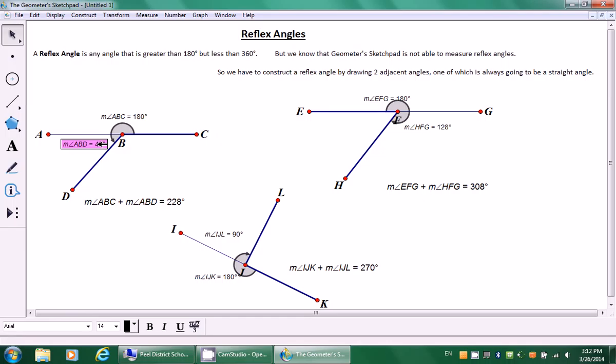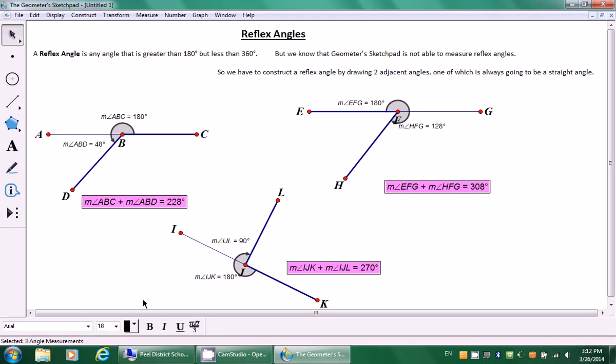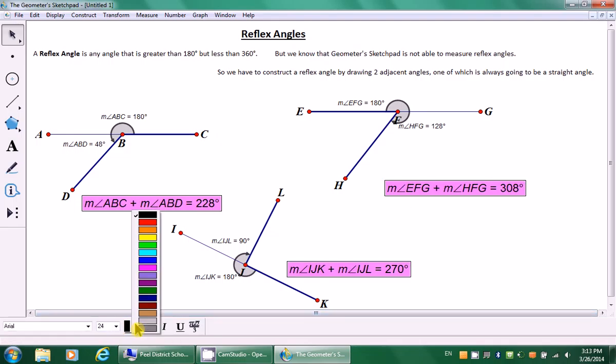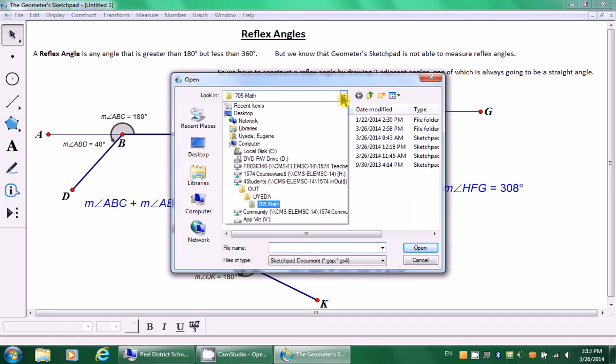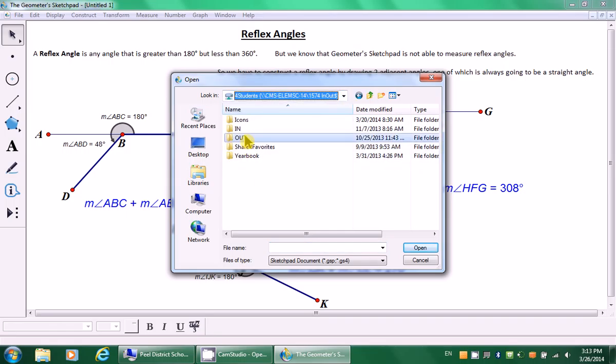So what I'm going to do is click on the actual angles that I measured and change the font size down to 14. I'm going to reposition them so they look nice and neat. And then I'm going to keep these ones. I'm going to click on these ones and make them a little bit bigger. And then maybe I'll change the color.